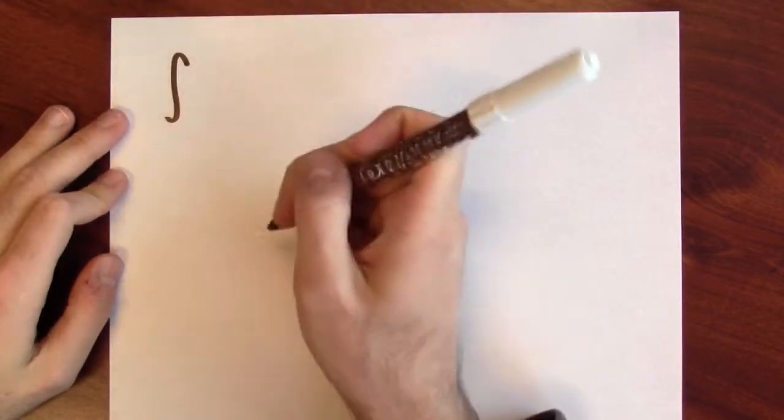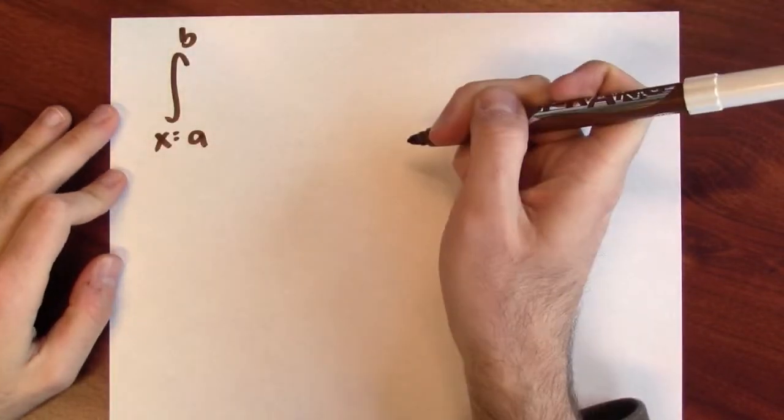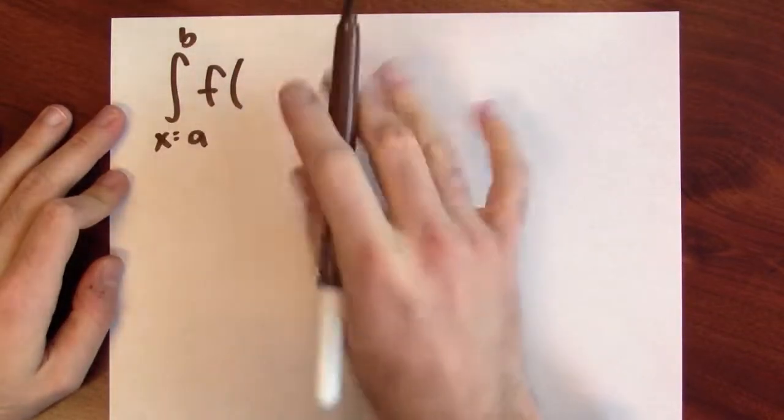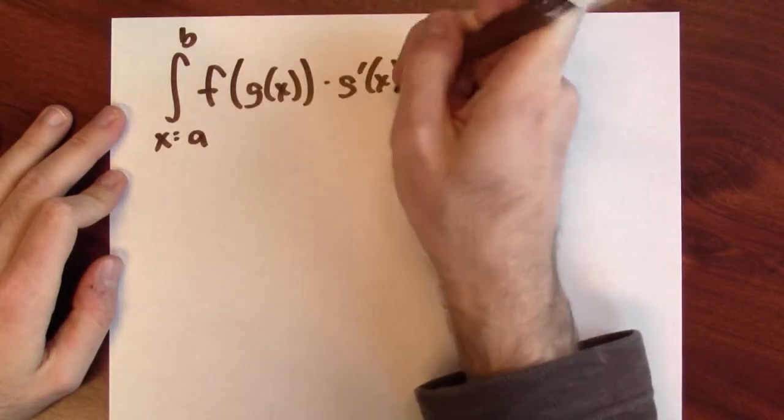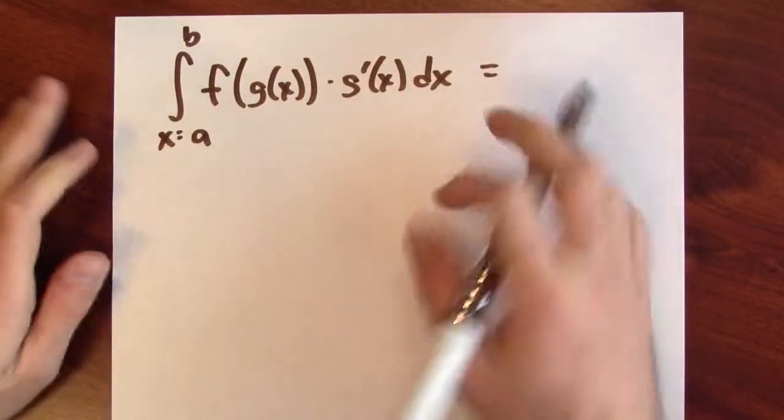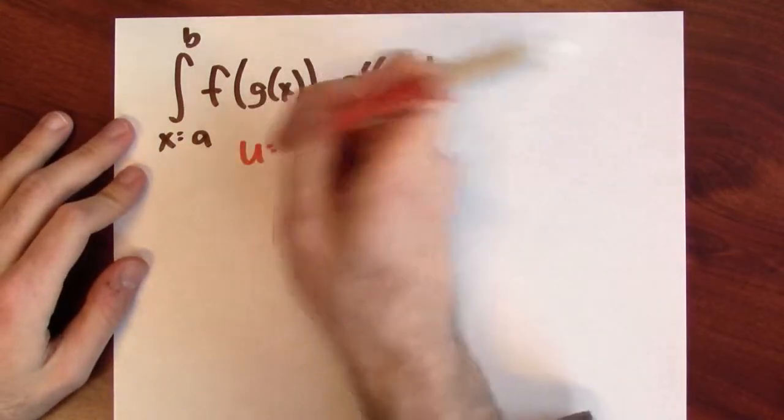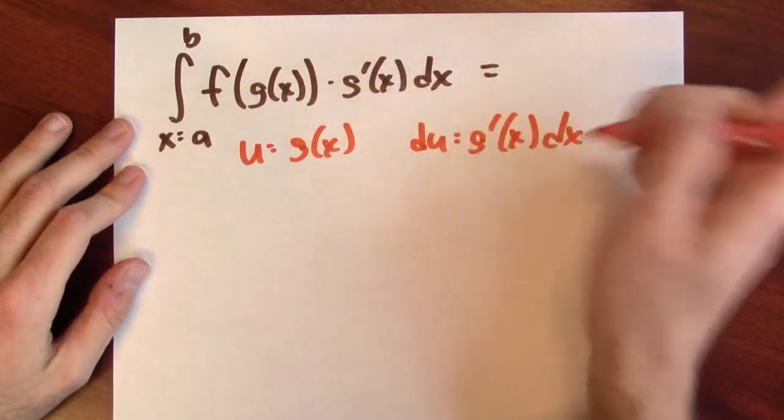So here's the setup. I've got the integral, x goes from a to b, of some function f, not the derivative of f, just f, at g(x) times g'(x) dx. Now, how could I approach a problem like this where I can make a substitution? u equals g(x), so that du is g'(x) dx.